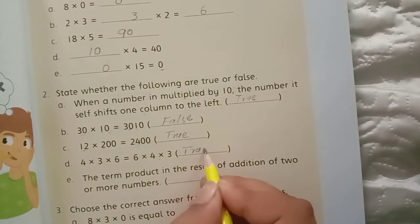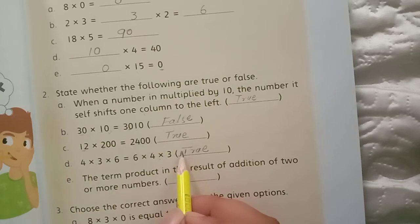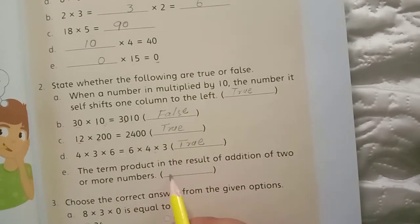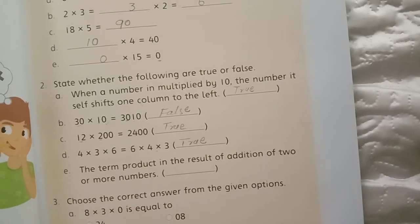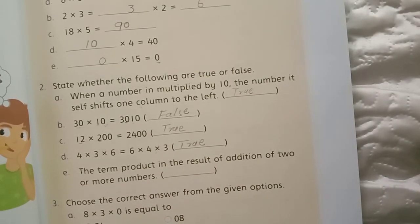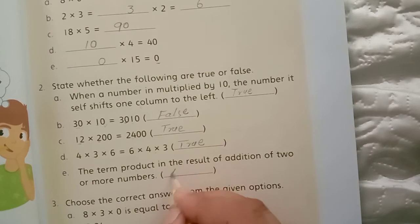The term product is the result of addition of two or more numbers. How is the term product? When you add two numbers? This is wrong. Product is always multiplied by two numbers. This is a false statement.